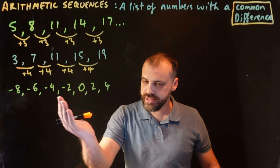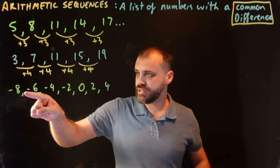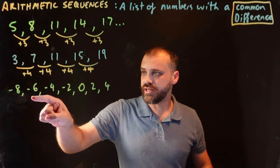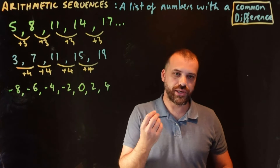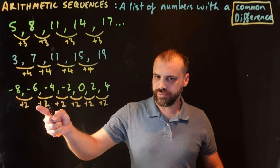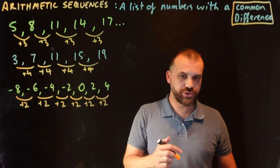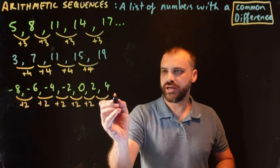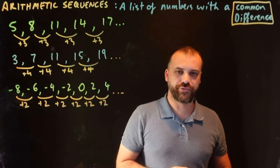This is an arithmetic sequence because it has a common difference. Negative eight, negative six, negative four, negative two — each time plus two, plus two, plus two, plus two. And it goes on forever and ever.